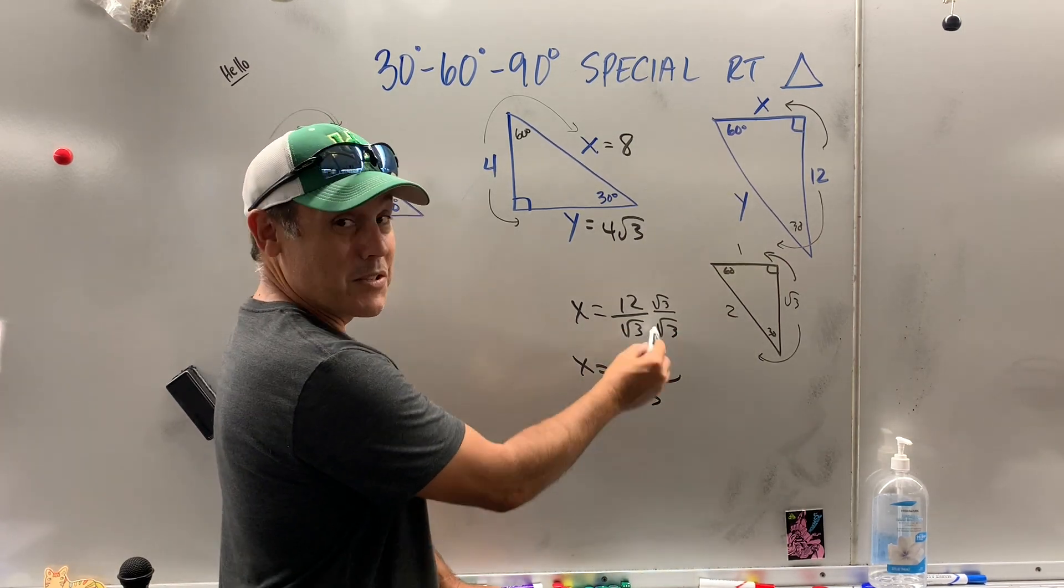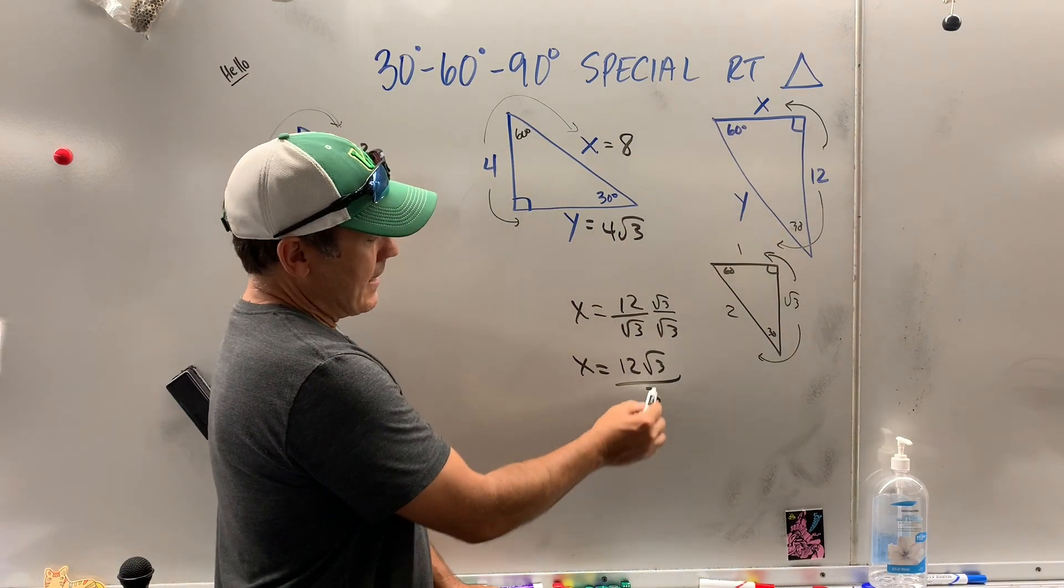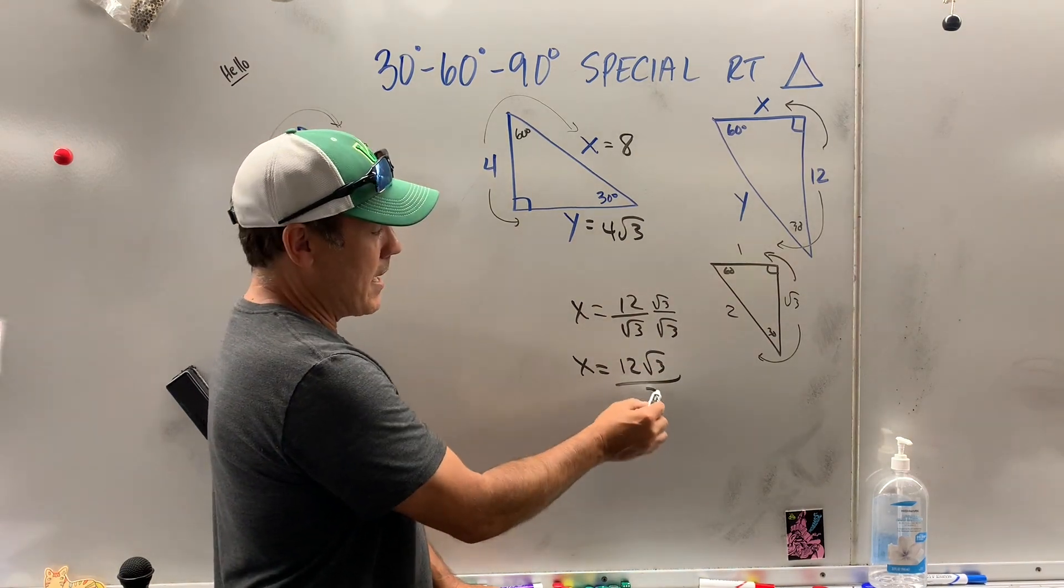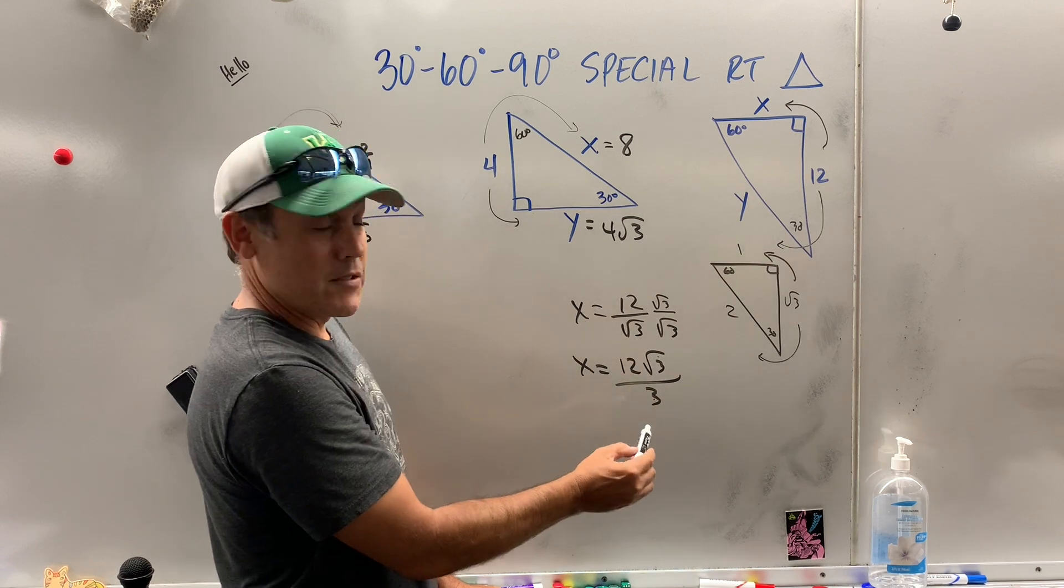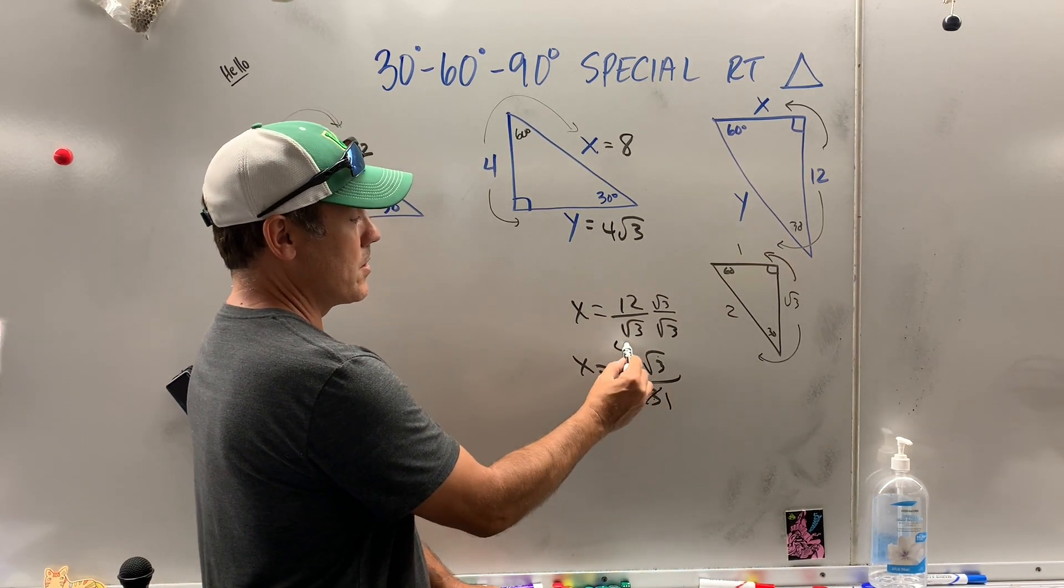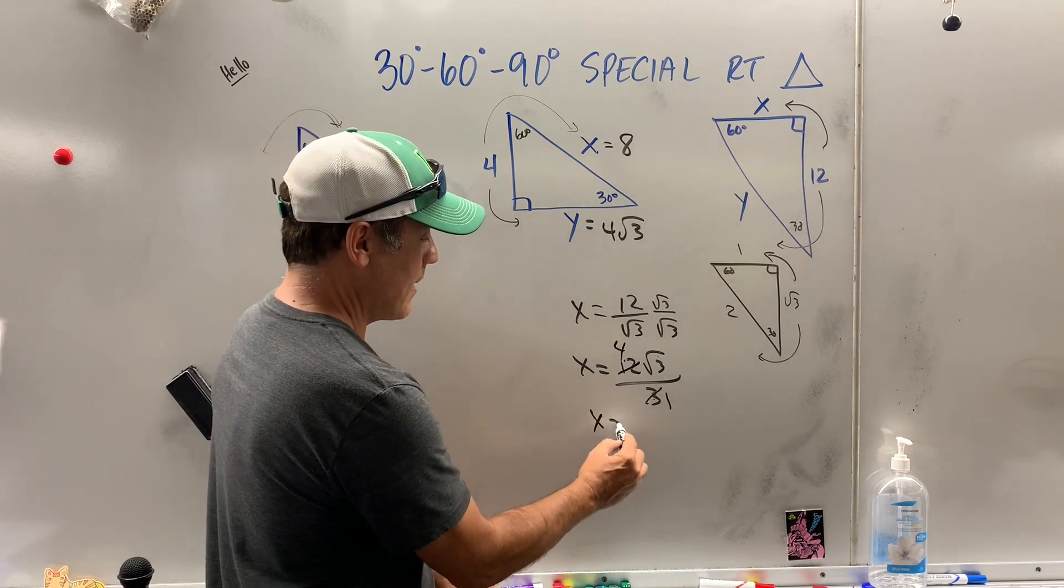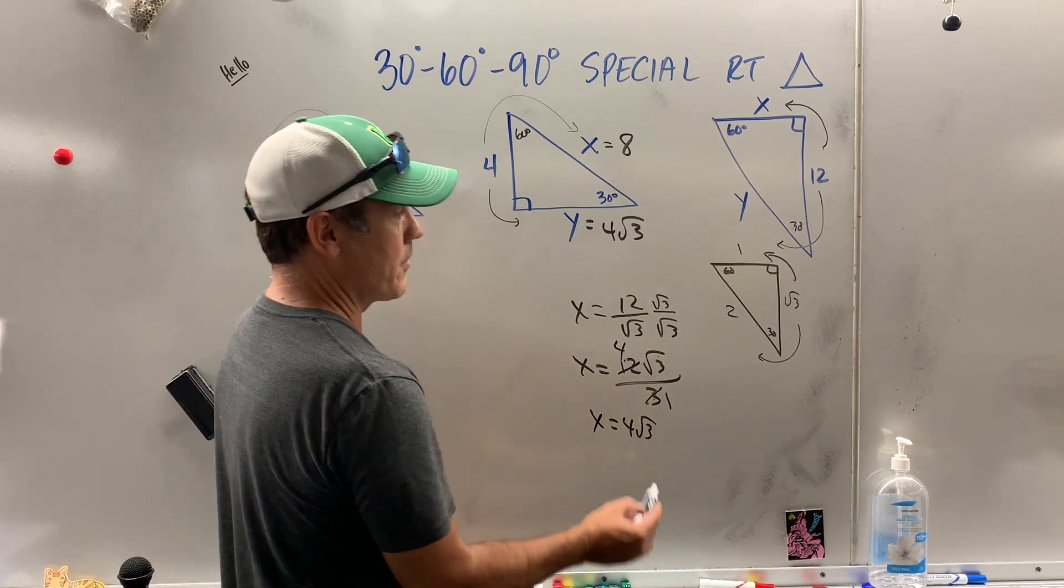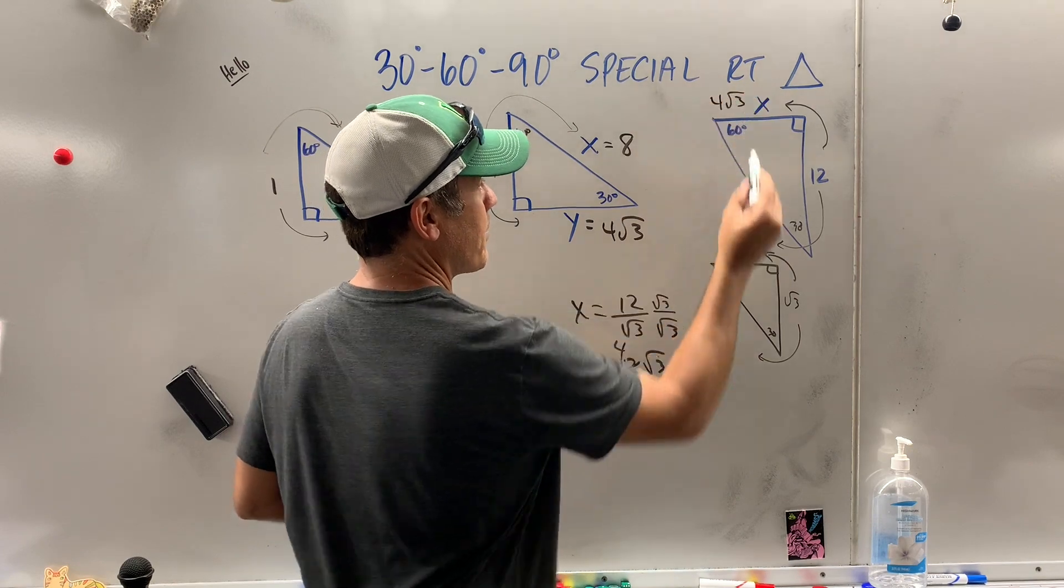Now, is it tempting to reduce those 3s? That's the sucker's move. Don't do that. You can't manipulate numbers inside radicals with a number outside radicals. But you can reduce here. 3 goes into 3 once. Goes into 12, 4 times. So, x, after all that, is equal to 4 radical 3.